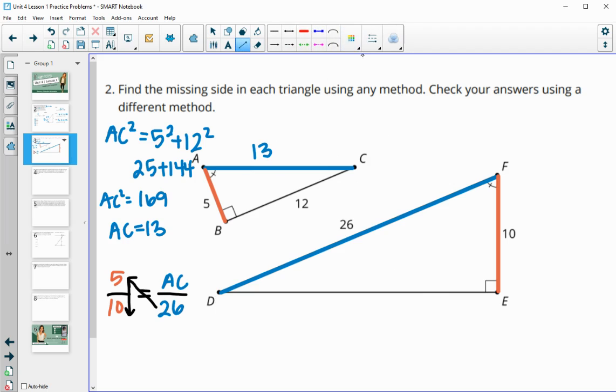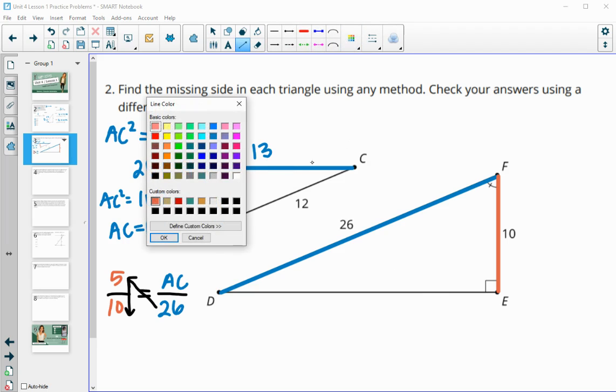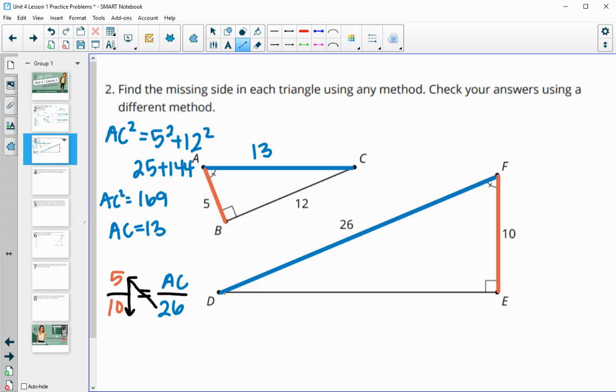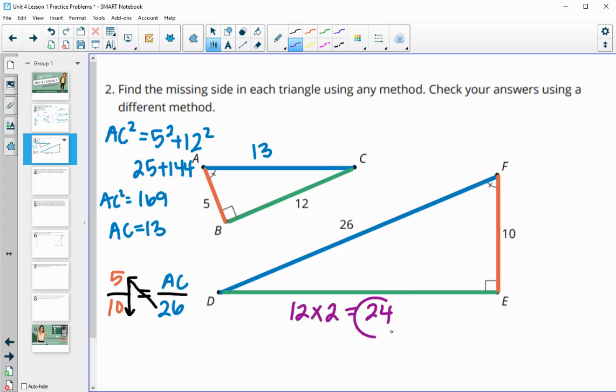So then for this final missing side over here, I'm just going to do the scale factors because it's quicker for me. So when I'm looking at this one compared to this one, so we can see that this triangle is just two times larger, right? So five times two gives us 10. 13 times two gives us 26. So this side is going to be 12 times two, which is 24 for that one.